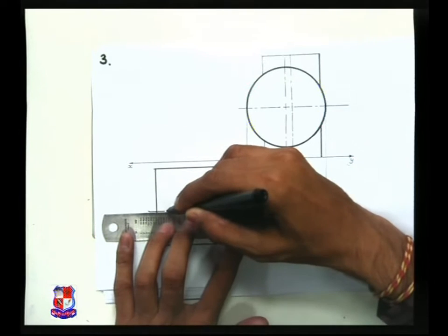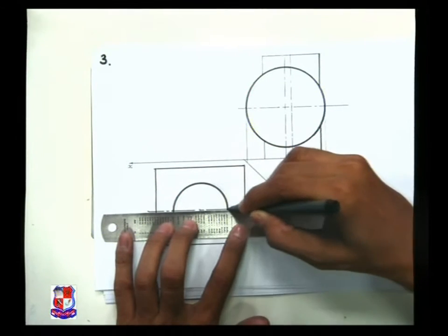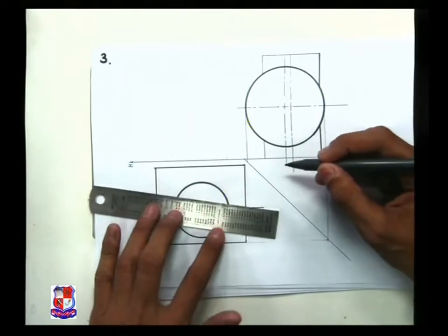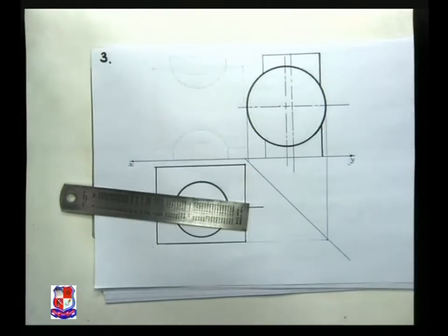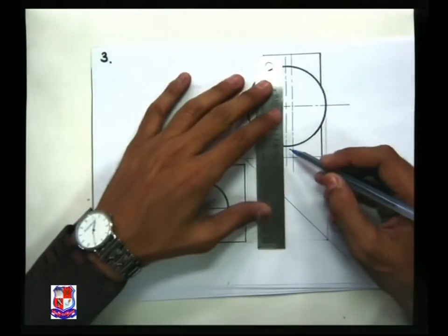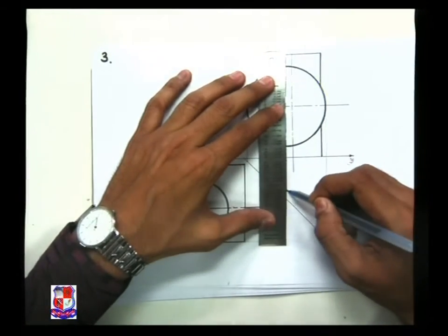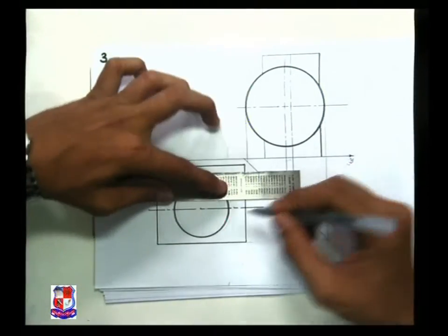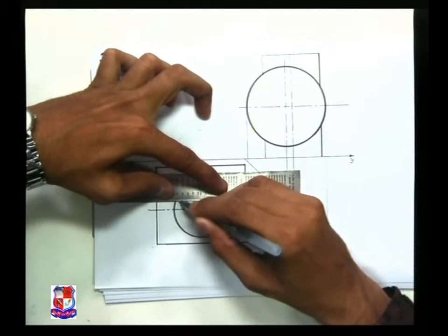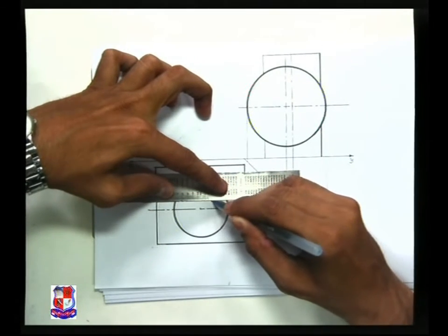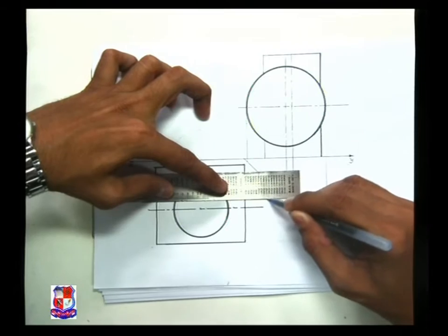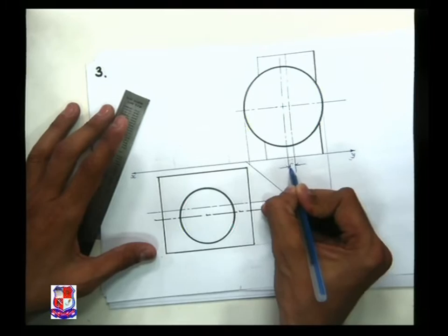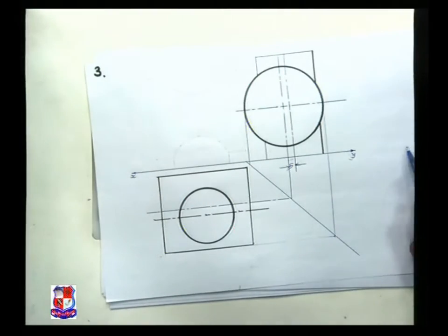So this is the axis of the vertical cylinder. The axis of the horizontal cylinder is this one, which could be transferred from here to the miter line, and from that we draw a horizontal line like this. So this axis is the axis of the vertical cylinder, and this distance is 5 millimeters, which is given in the data.